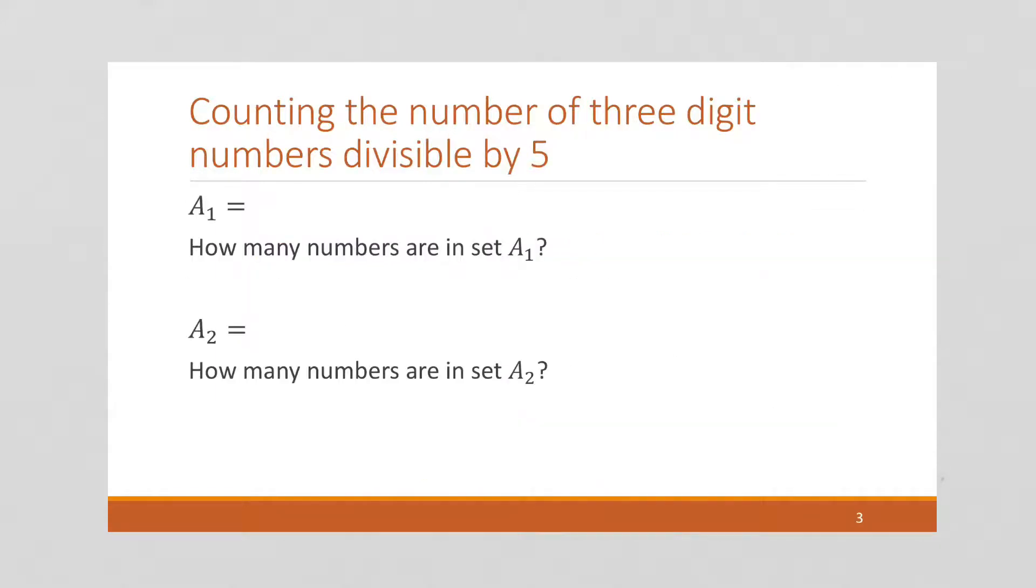So if you recall, A1 was the number of numbers that end in 0. So we've got three digits, and we know that the last one has to be a 0. So there's only one way to do that last digit. How many ways are there to do the first digit?